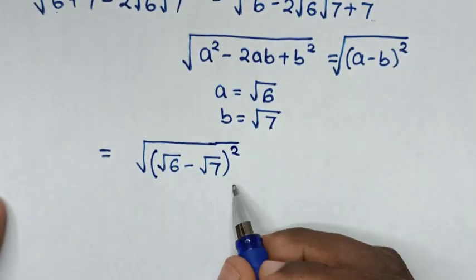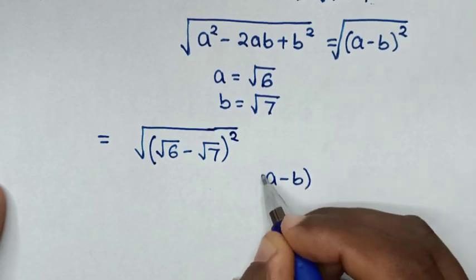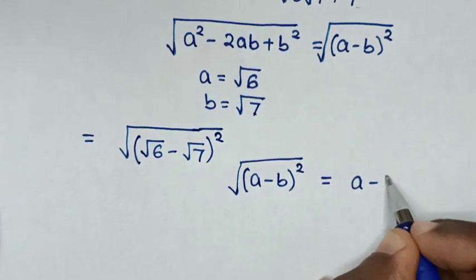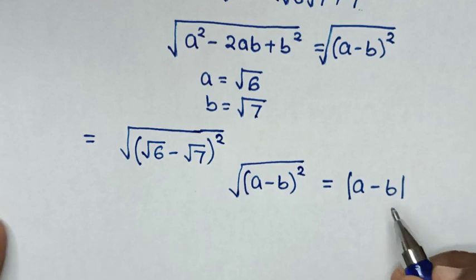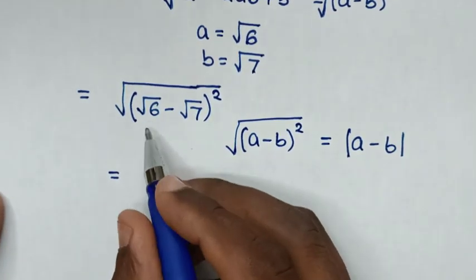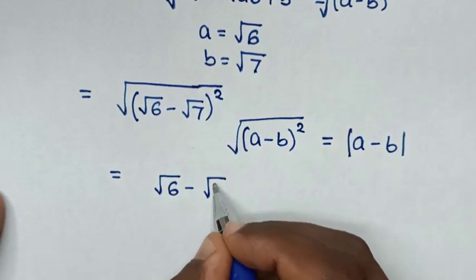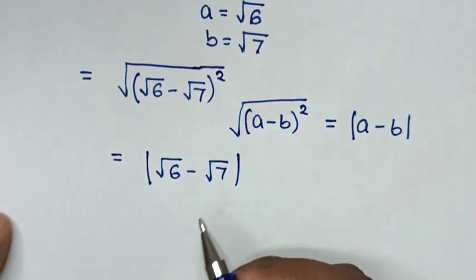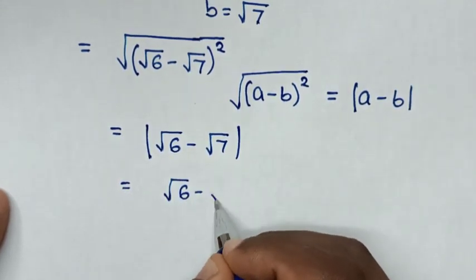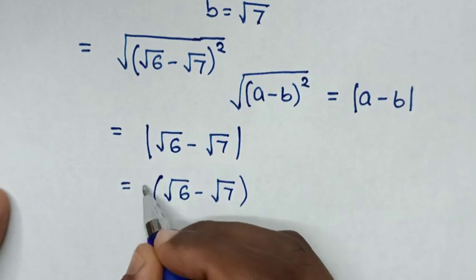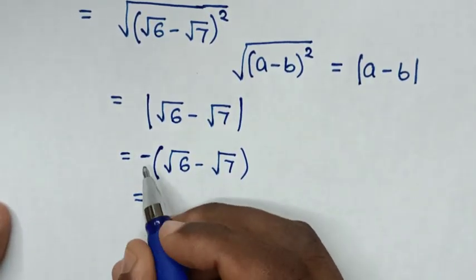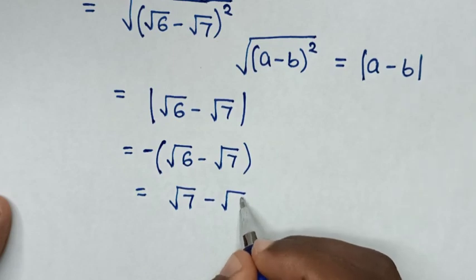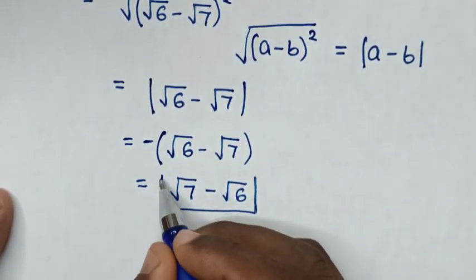This part is in the form of (a minus b) squared under a square root, which equals the absolute value of (a minus b). That means this value should be positive. So it will be equal to the absolute value of square root of 6 minus square root of 7. But square root of 6 minus square root of 7 is negative, so we multiply by negative one. Then negative times negative square root of 7 is positive square root of 7, minus square root of 6. So this is the final answer.